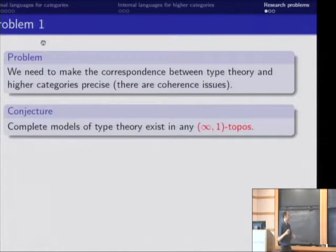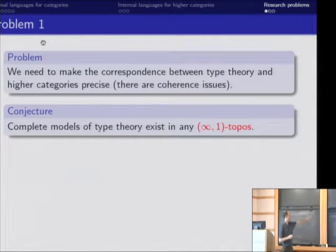So the current progress is that we're almost able to prove, I feel like we're almost able to prove this conjecture that in any (∞,1)-topos, which is a very particular nice kind of (∞,1)-category, we have a model of the type theory, this intensional type theory.